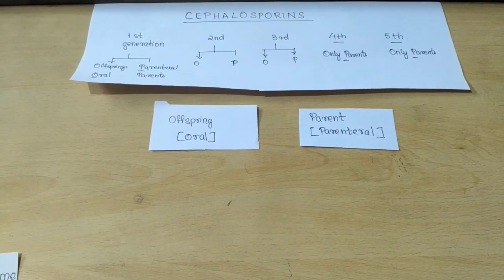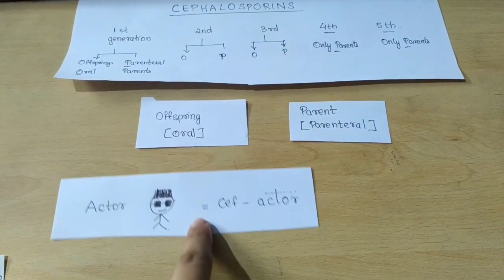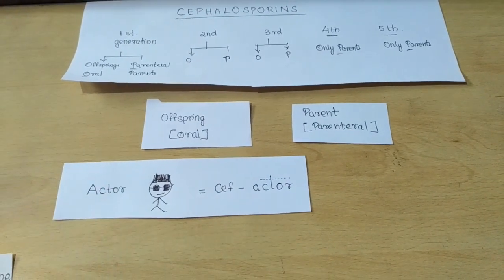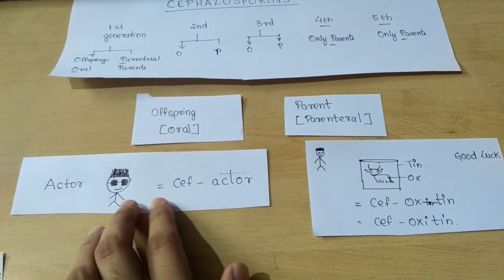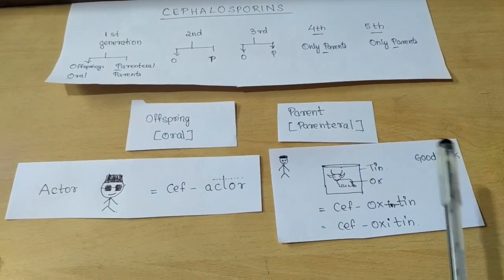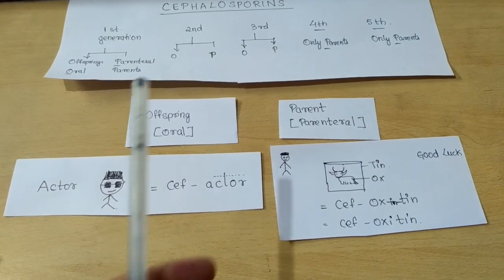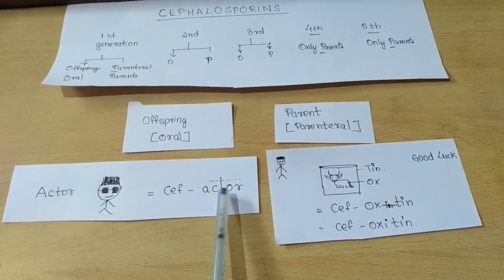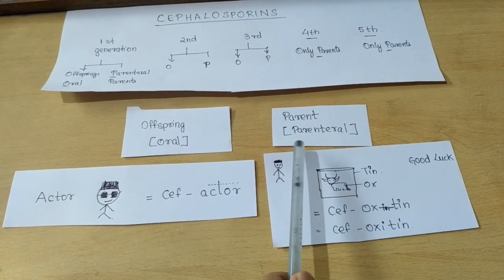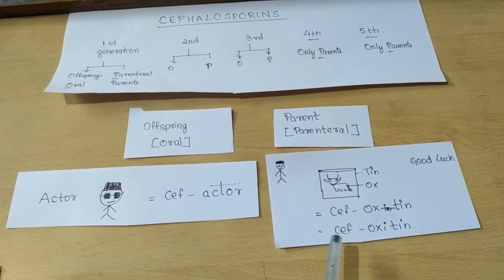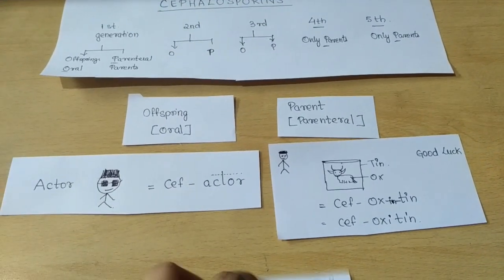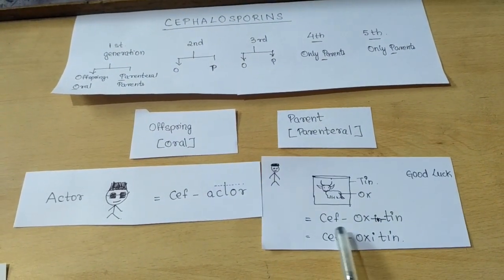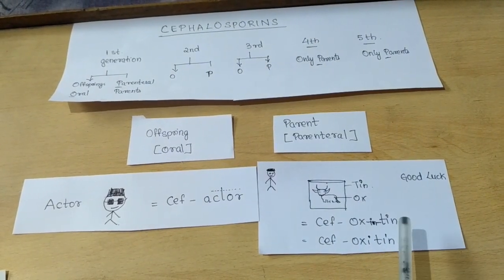The first offspring of the second generation is an actor, and his father keeps an ox in a tin box for good luck. So the first drug under the second generation oral is Cefaclor — instead of 't' we write 'l'. The first drug under the parenteral part is Cefoxitin, with the prefix 'ceph' and 'ox in a tin'.